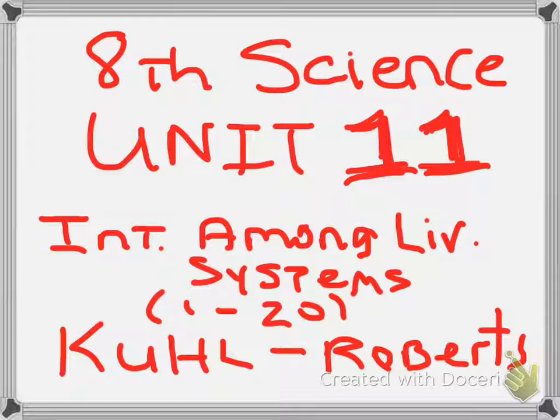Number twelve: In the food web below, which two organisms have a producer-consumer relationship? F) squirrel and grass, G) hawk and squirrel, H) rabbit and grass, J) rabbit and acorns.